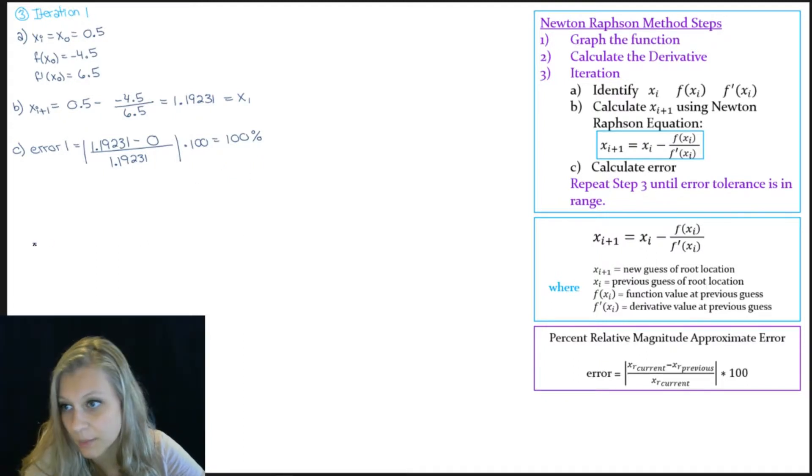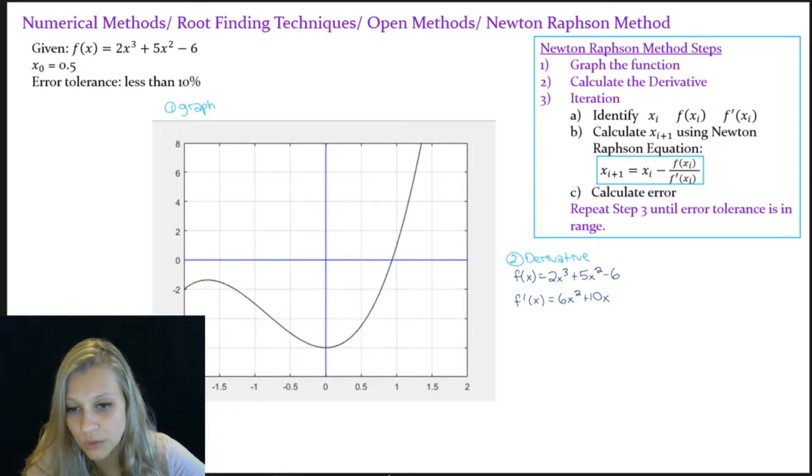Before we do that though, I'm going to go back to my graph and show you where our estimates are. So I'm going to use red to denote x of 0, which is right here. And then using the Newton-Raphson method, we calculated an x of 1 value. And that was 1.19231. So it's probably about right in here. So we've gotten closer to the actual root, but as you can see, we're still pretty far off. So that's why we need to perform another iteration.